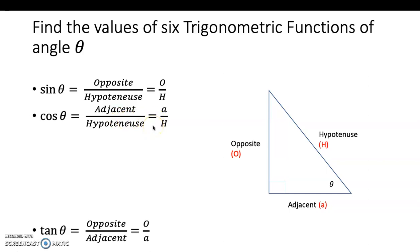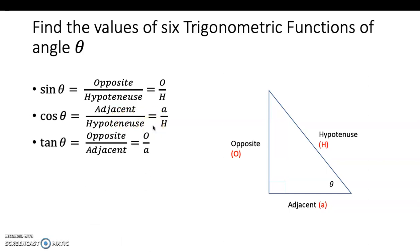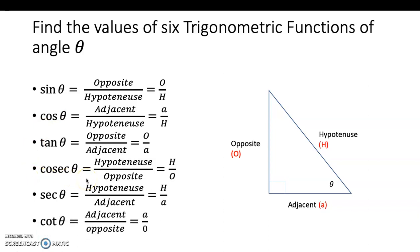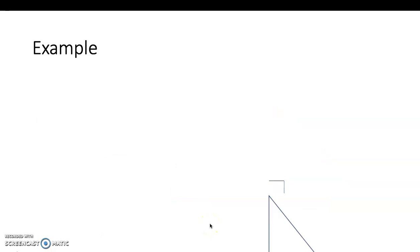Tangent theta is opposite over adjacent. The next three are the reciprocals of these three. Cosecant theta is hypotenuse over opposite, which is the reciprocal of sine. Secant theta is hypotenuse over adjacent, the reciprocal of cosine. And cotangent theta is adjacent over opposite, the reciprocal of tangent.